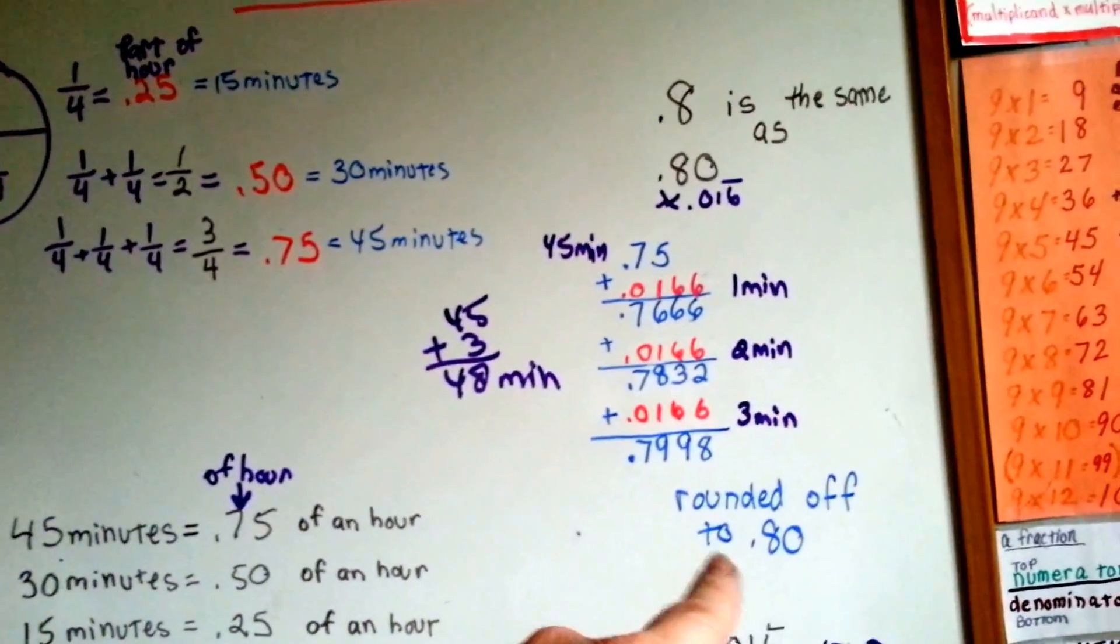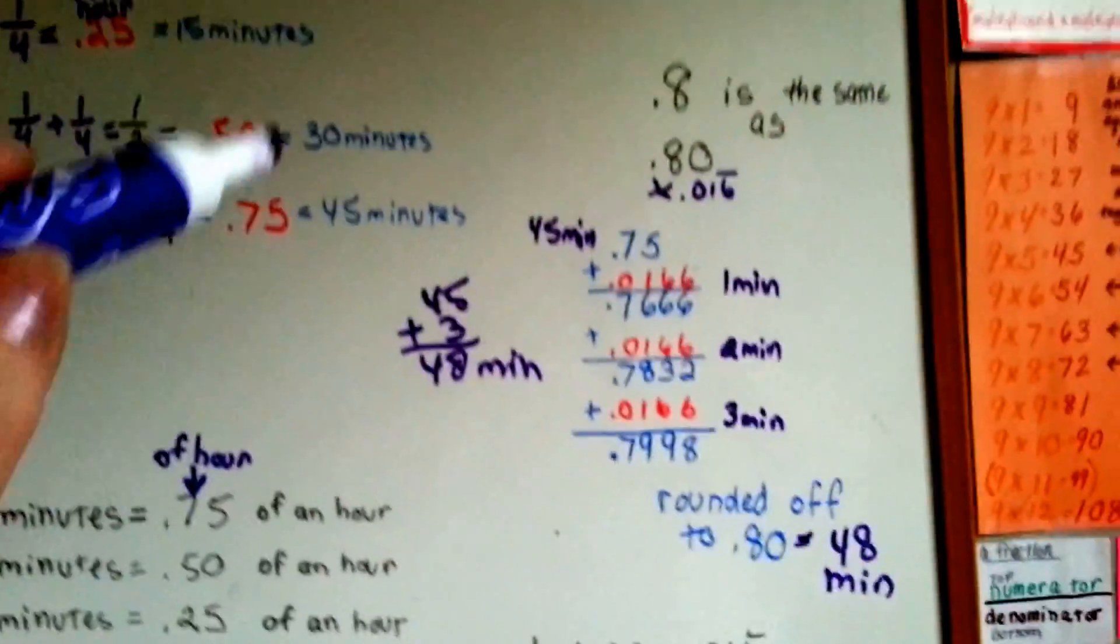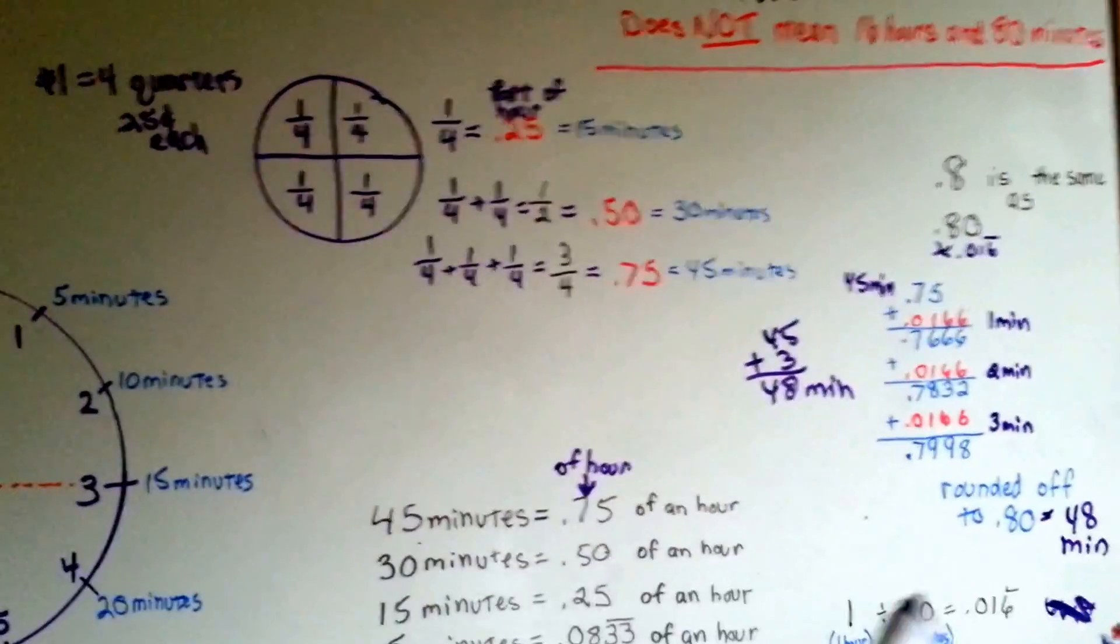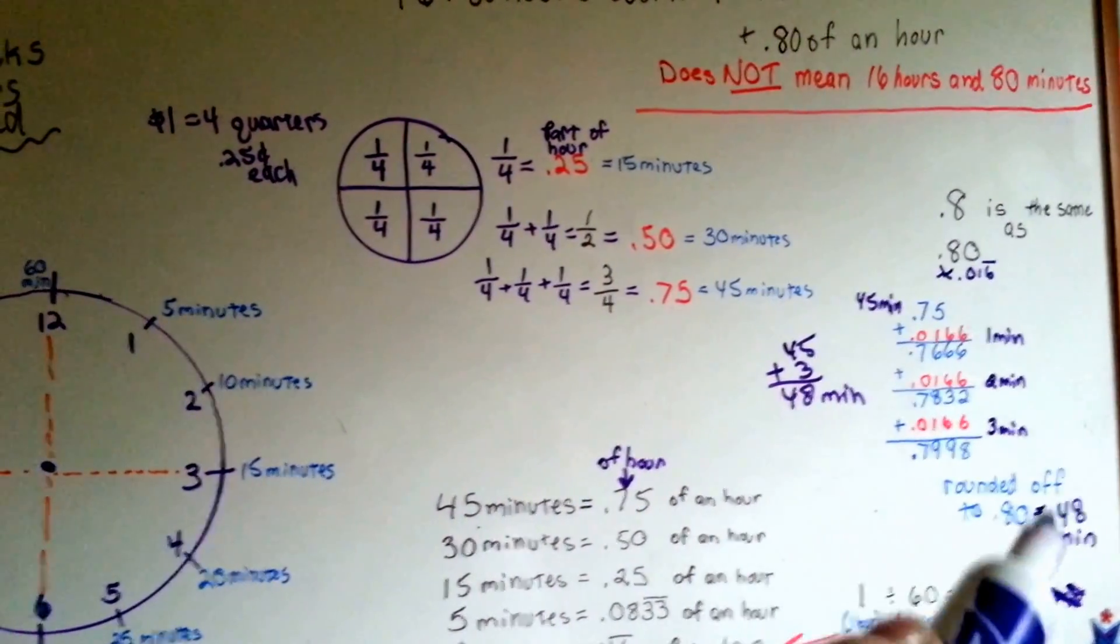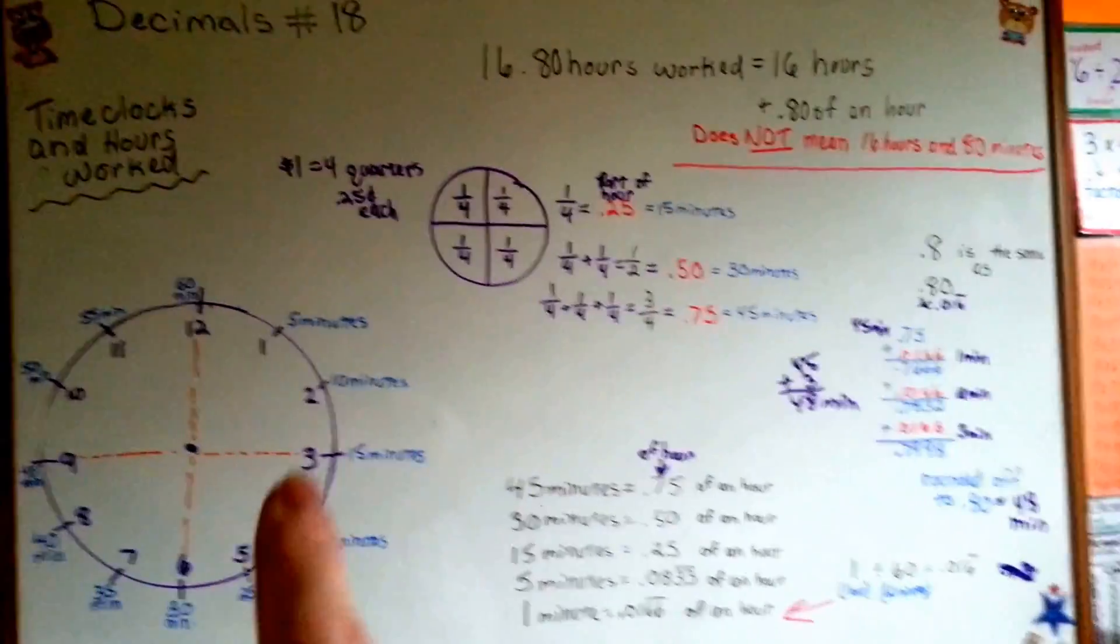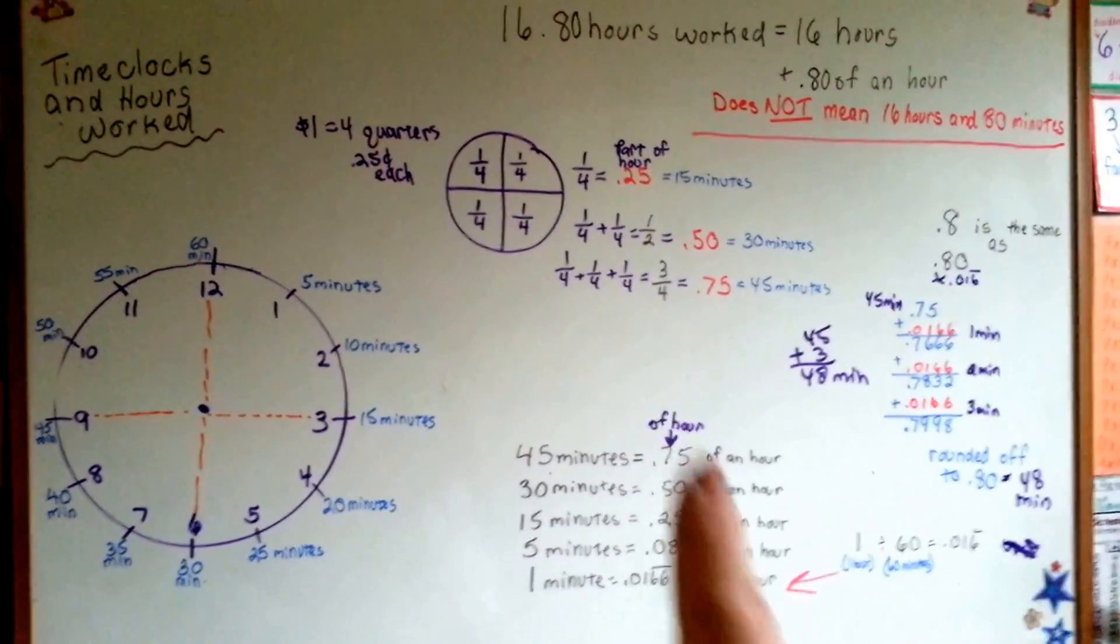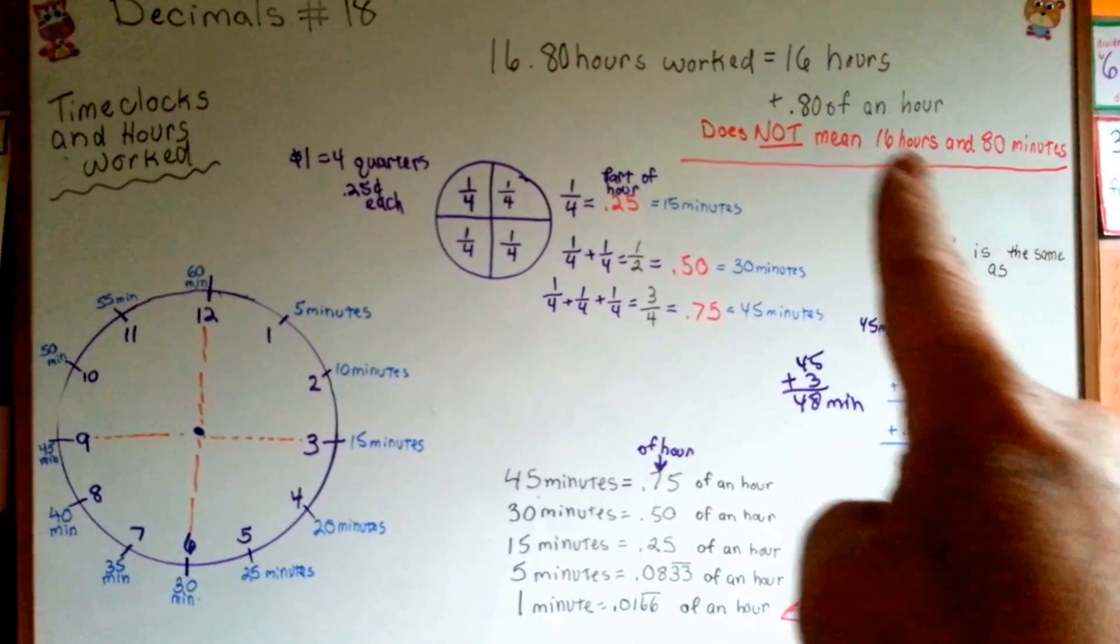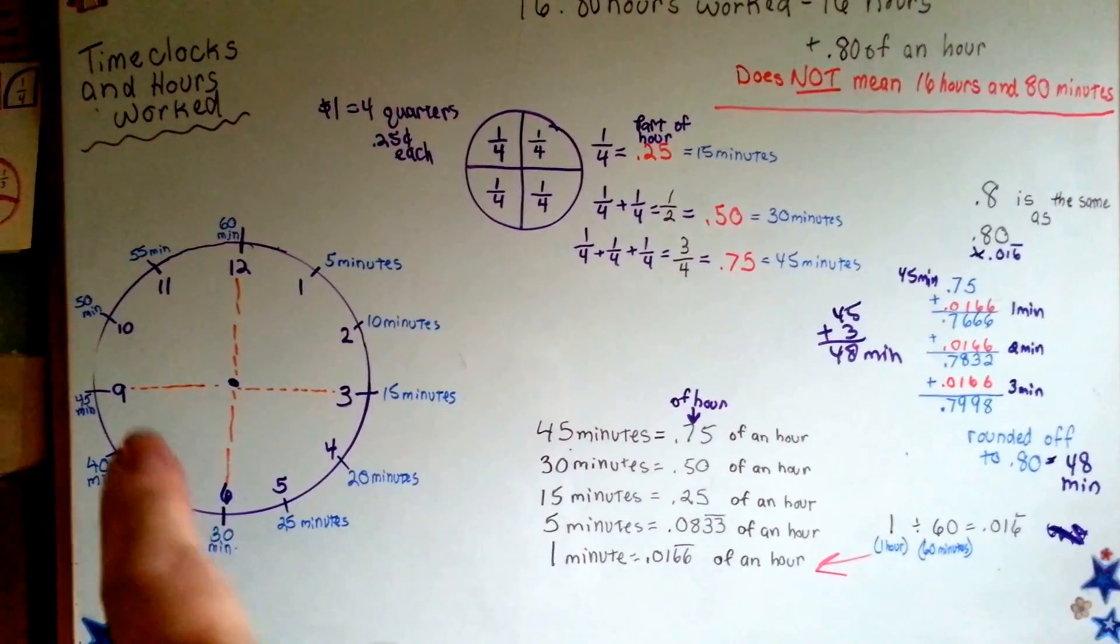That's 48 minutes. So .80 is equal to 48 minutes. That means she worked 16 hours and 48 minutes, and she would be paid for 16 hours and 48 minutes. She must have either did a little extra overtime past the half hour or past the hour, or she got off work 12 minutes early and didn't complete her day by 12 minutes. Either way, to figure out your time and your pay, keep in mind that .0166 is one minute of an hour, and when you see .something hours worked, that doesn't mean it's minutes. That means it's part of an hour, and .75 is three quarters of an hour.